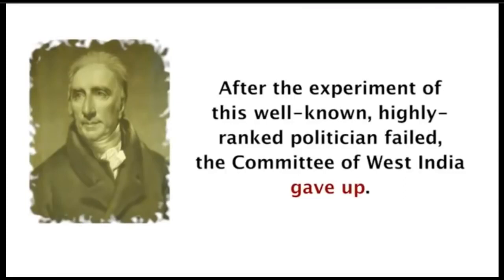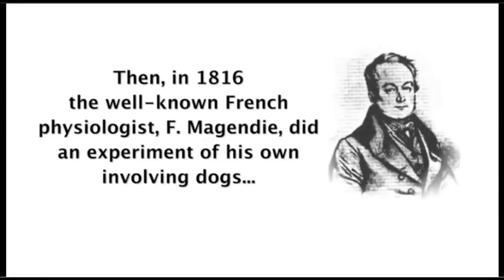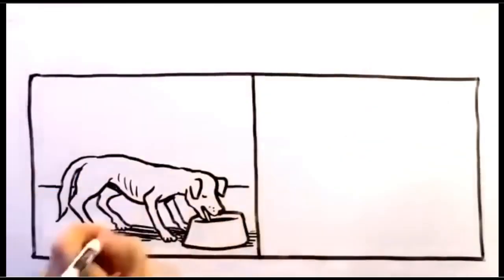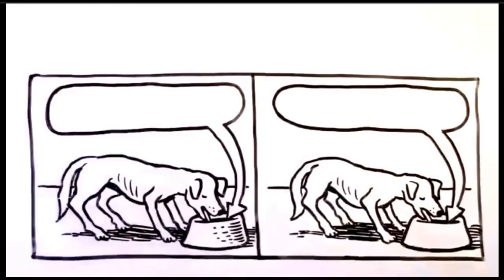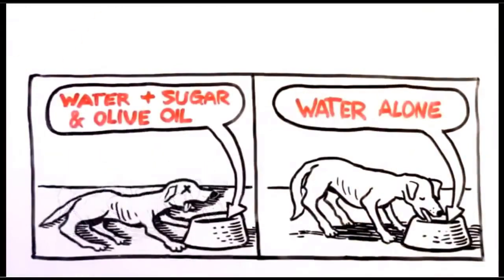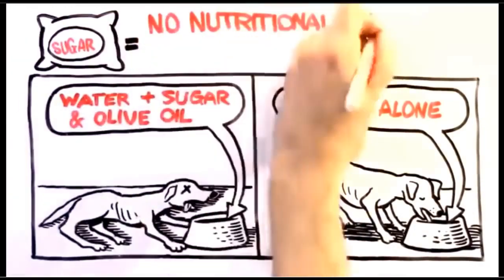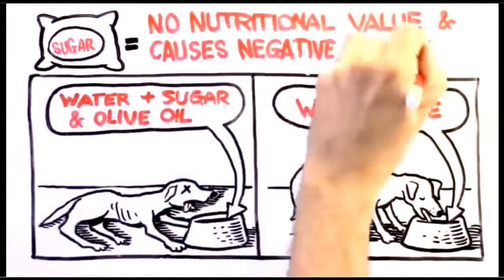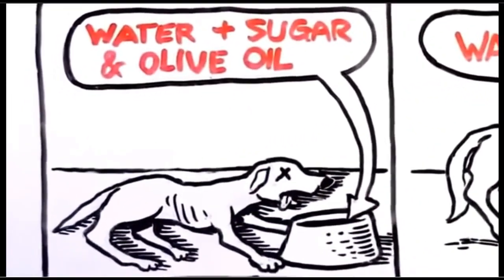Then, in 1816, the well-known French physiologist, F. Majandie, did an experiment of his own involving dogs. He determined that dogs fed with water containing sugar and olive oil, wasted away and died faster than dogs fed with water alone. This showed sugar not only had no nutritional value, but actually caused negative effects. This shut the sugar manufacturers up, but just for the time being.